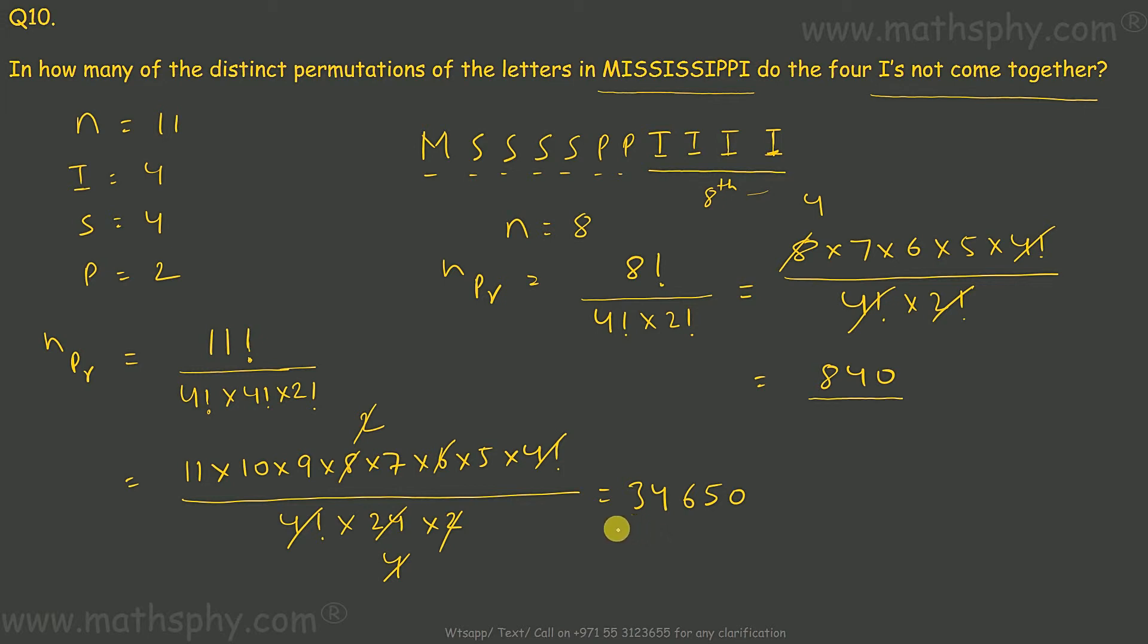Now I have 34,650 arrangements, normal arrangements. Out of that, I have 840 arrangements where all the four I's are coming together. If I take off 840 from this number, the remaining numbers, I will write 34,650 minus 840.